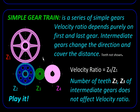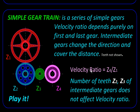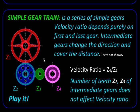Now suppose you want to get a very large velocity ratio — that would mean the ratio z4 upon z1 is very large, and therefore the size of the first or the last gear will be much larger than the other one. This may not be very convenient from a space point of view. So for getting a large velocity ratio, a simple gear train is not a practical solution. For that we use compound gear trains.